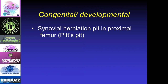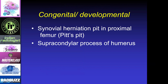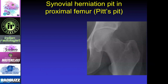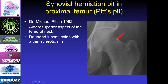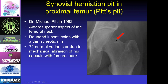Moving on to congenital and developmental abnormalities — these include the synovial herniation pit, or Pitt's pit, the supracondylar process of the humerus, and the soleal line of the tibia. Pitt's pit is a lesion within the superior lateral aspect of the femoral head and neck junction, first described by Dr. Michael Pitt in 1982. It's a rounded lucency with a thin sclerotic rim in this exact location. If it doesn't have those three features, we don't want to call this a synovial herniation pit — we don't want to over-call this as a metastasis.